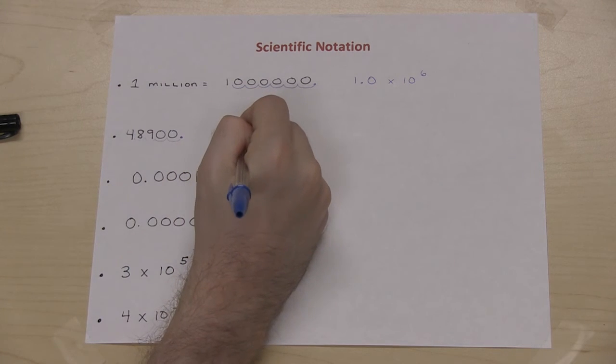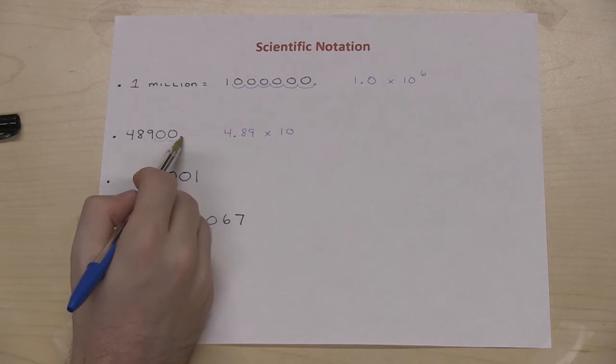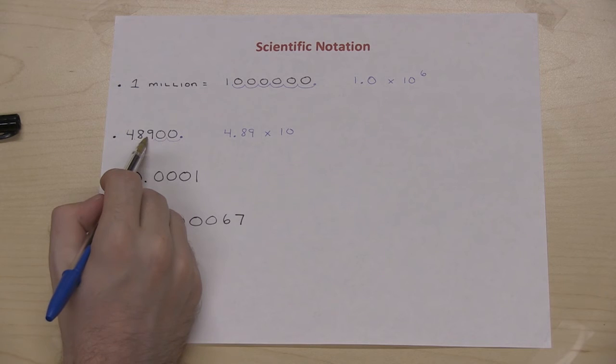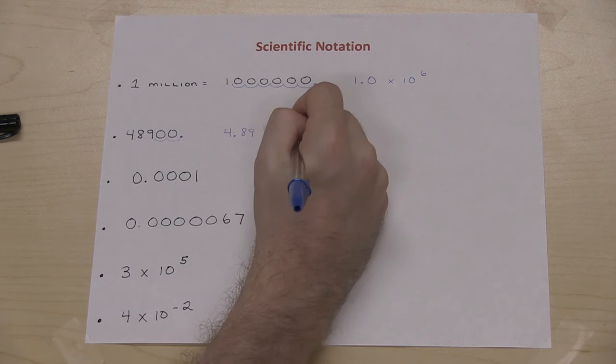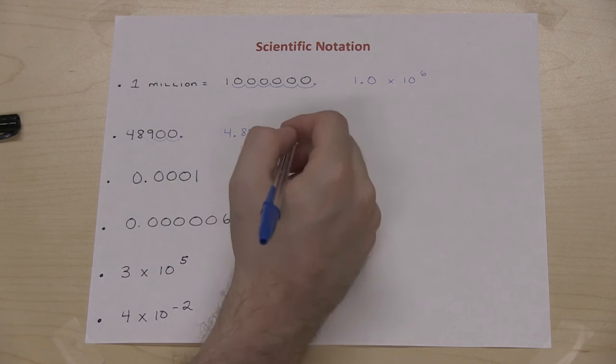So I'll write 4.89 times 10, and now because I've moved the decimal 1, 2, 3, 4, that will be 4.89 times 10 to the 4 or plus 4.